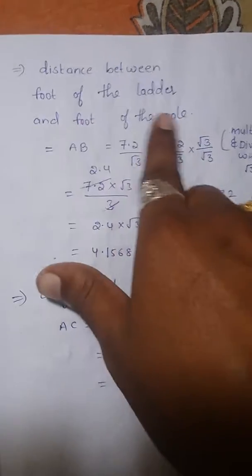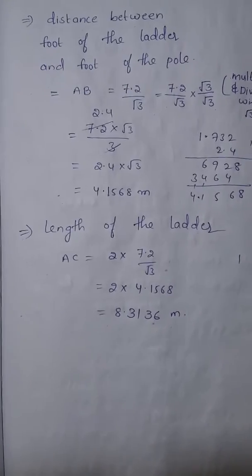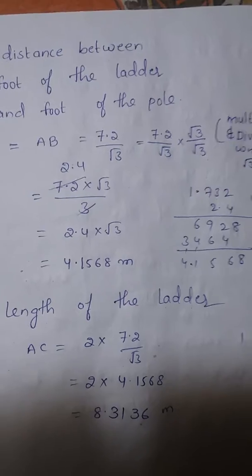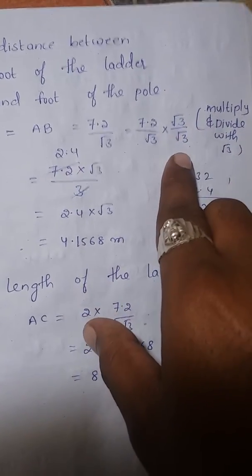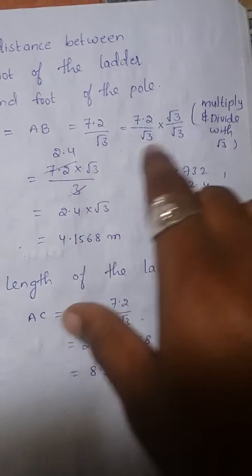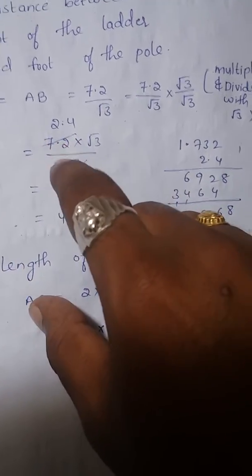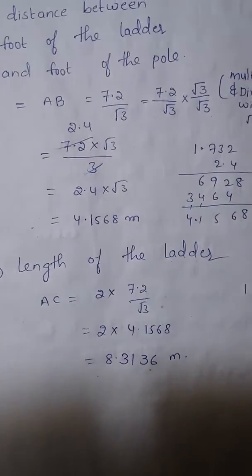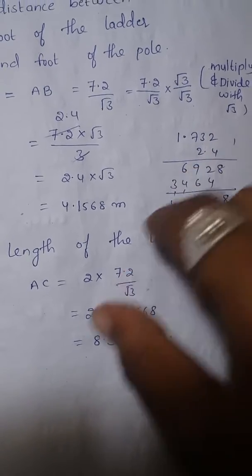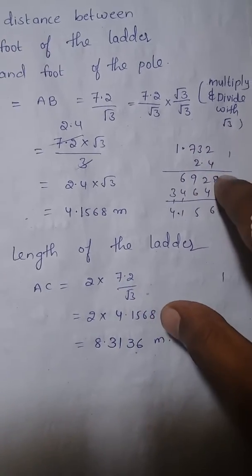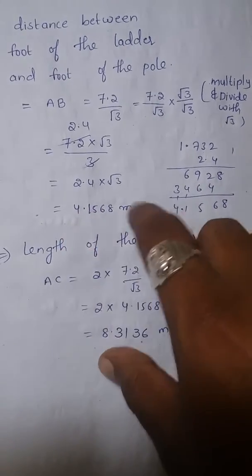Now calculate the distance between the foot of the ladder and the foot of the pole. That is AB = 7.2 / √3. Multiply and divide by √3: that gives 7.2 × √3 / (√3 × √3) = 7.2√3 / 3 = 2.4√3. The value of √3 is 1.732, so 1.732 × 2.4 = 4.1568. This is the distance between the foot of the ladder and the foot of the pole.